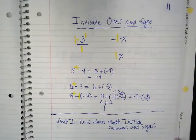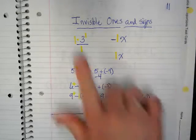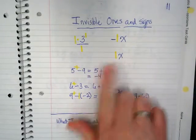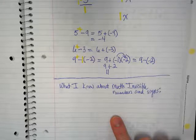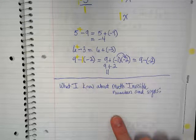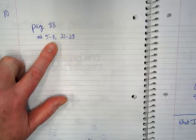On page 11 we talked about invisible waters and signs. We put the invisibles in yellow to show where they would be. Underneath you guys wrote what you know about invisible numbers and signs in math. We did a little practice on page 10 where we did some problems that had invisibles in them.